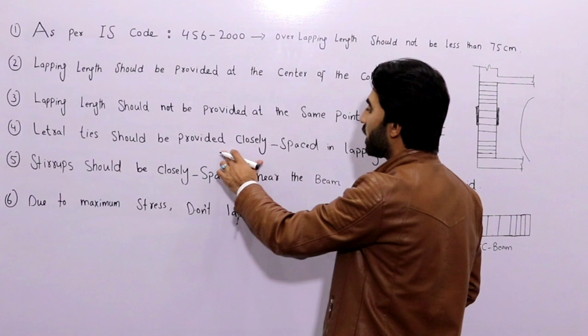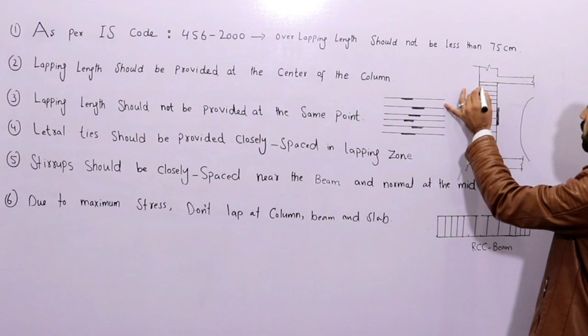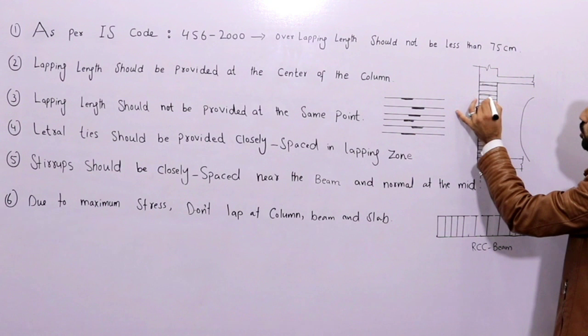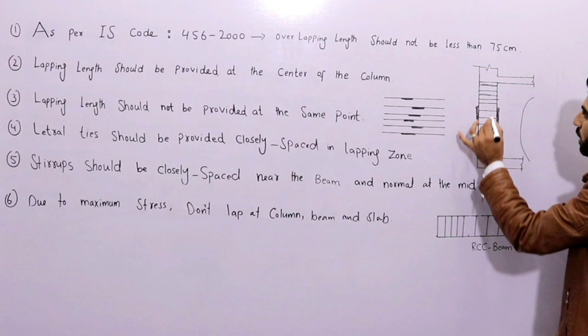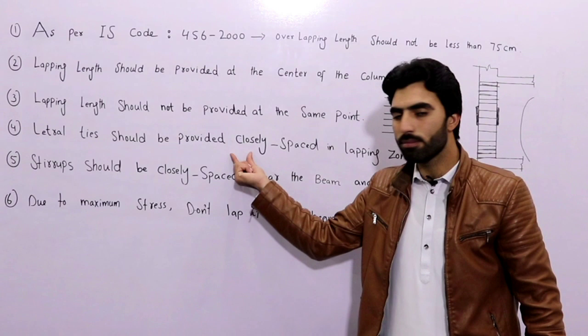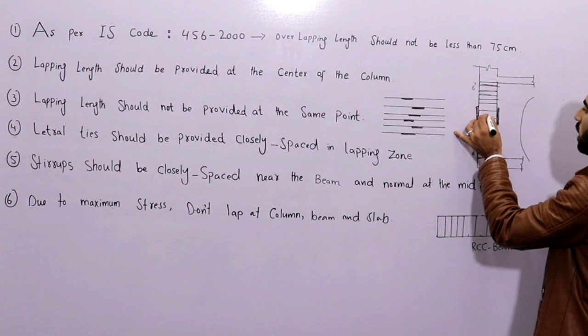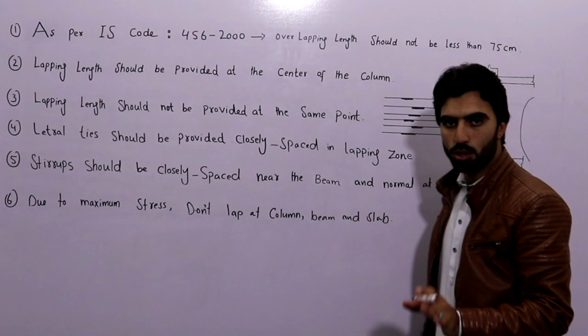The fourth point: lateral ties should be closely spaced in the lapping zone, especially in columns. Near the supports at the bottom and top zones, the lateral ties should be closely spaced. At the mid-zone, the spacing can be normal. For example, if ties are at 6 inches spacing in the lapping zone, you can use 7 or 8 inches spacing at the mid.